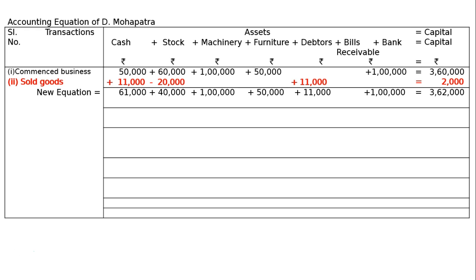The new equation after Transaction 2: cash rupees 61,000; stock rupees 40,000; machinery rupees 1 lakh; furniture rupees 50,000; debtors 11,000. The 11,000 credit sale is added to debtors, and 11,000 cash sale is added to cash. The profit of 2,000 is added to capital.